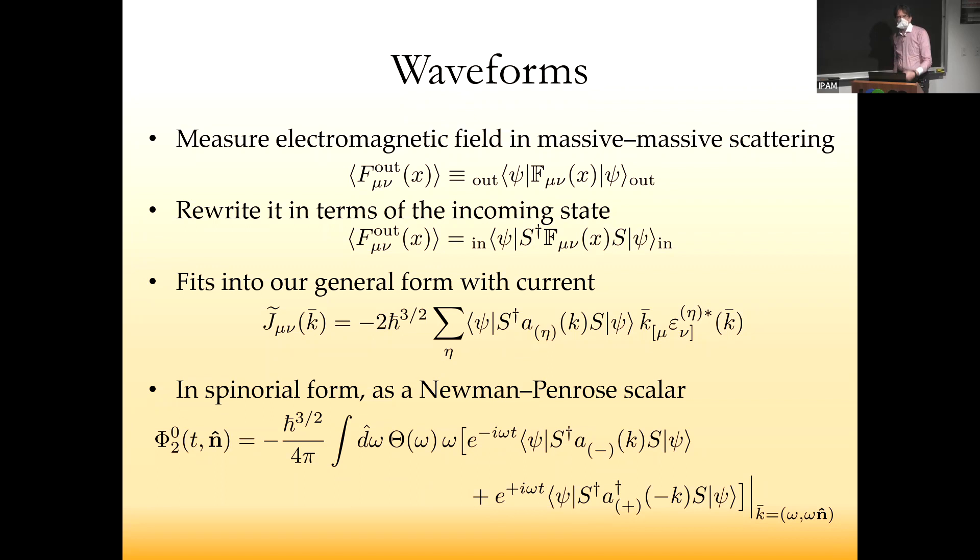We measure that in the outgoing state. We do the usual rewriting of the outgoing state in terms of the incoming state. If we had injected radiation or were shining light or poking our black hole with gravitational waves, we'd have terms corresponding to radiation in the initial state. But here we're starting with no radiation, so it's just S dagger F S. We can write down our general form of the current in terms of matrix elements. It's convenient in amplitude spinorial language to work with Newman-Penrose scalars, looking at states of definite helicity.